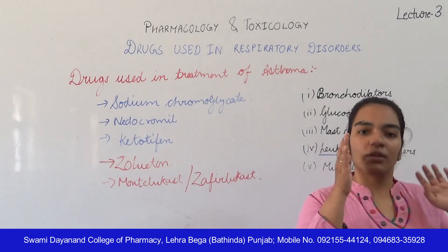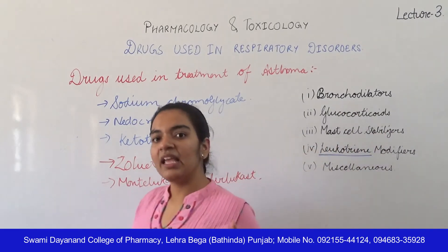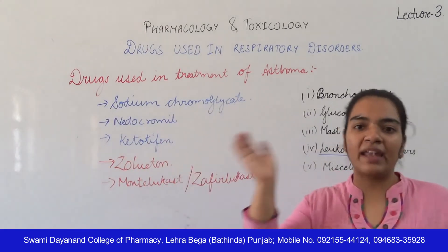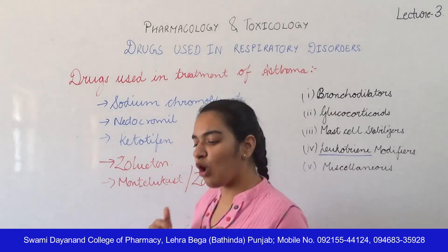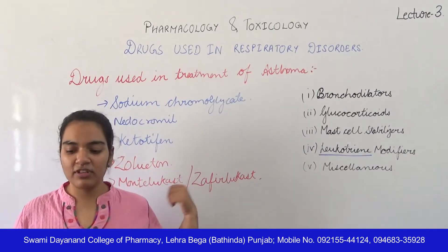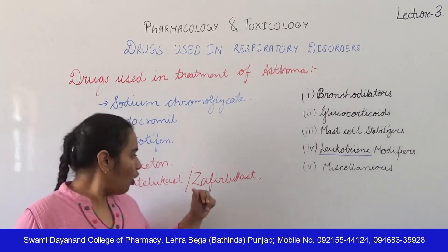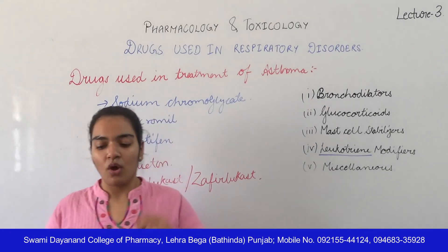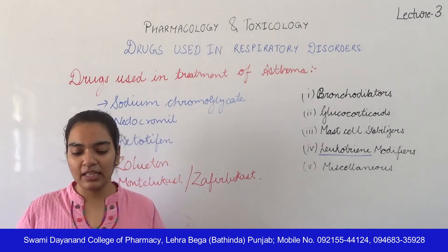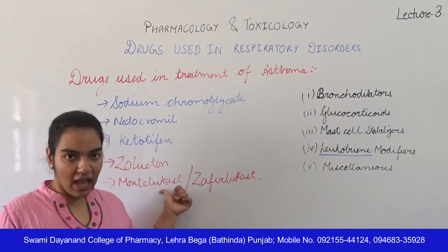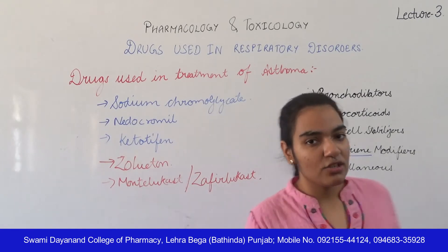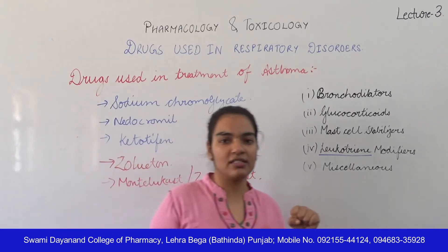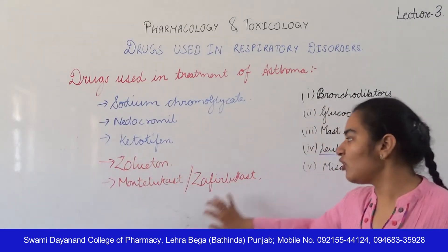Next, we have montelukast and zafirlukast, which are leukotriene antagonists. Unlike zileuton which prevents leukotriene synthesis, montelukast and zafirlukast block leukotriene receptors. Compared to zileuton, they are longer-acting agents dosed once a day. Montelukast is more effective. Zafirlukast can cause liver toxicity and inflammation, which is why it is less commonly used.